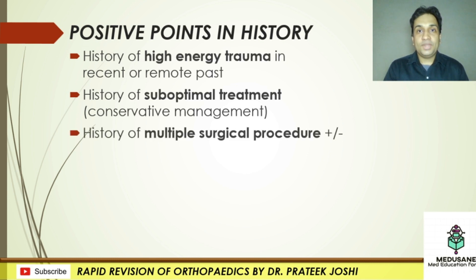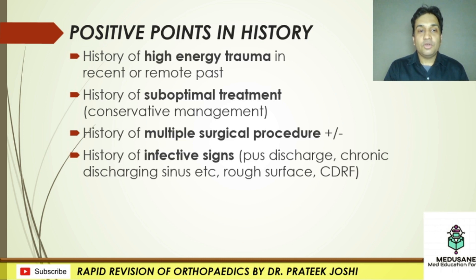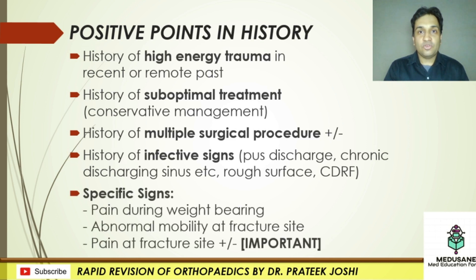If complications such as infection or further trauma are involved, the patient will often give a history of multiple surgical procedures — though this may or may not be present. There could also be a history of infective signs if dealing with an infected non-union: the patient may describe a small sinus on the skin discharging pus, or the limb feeling warm or swollen. Specific signs include abnormal mobility at the fracture site, pain at the fracture site on standing or walking, and pain at the fracture site in the case of infected non-union.